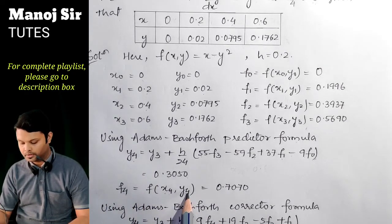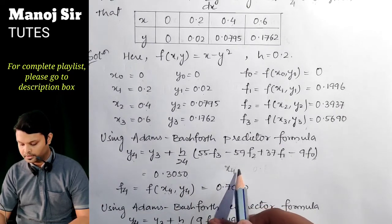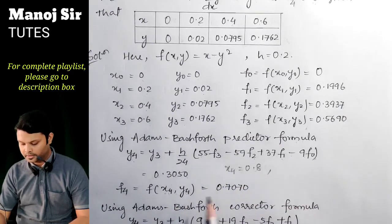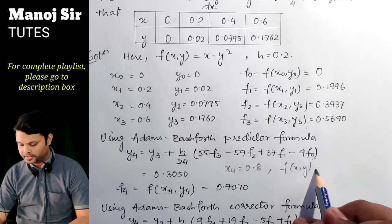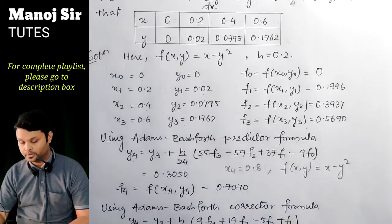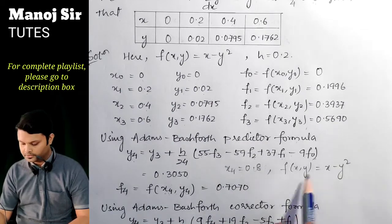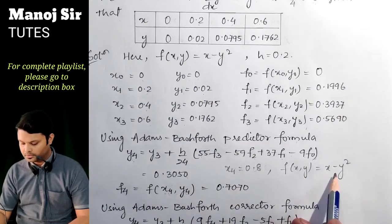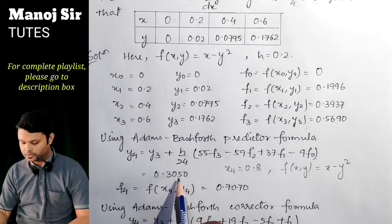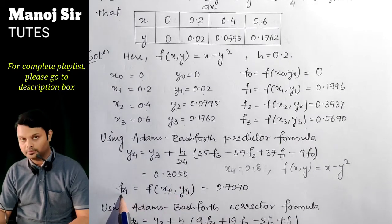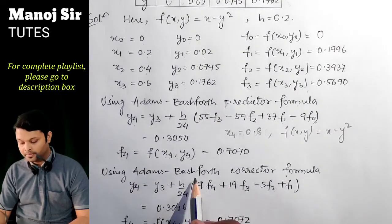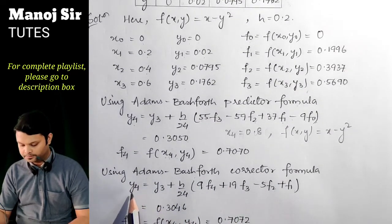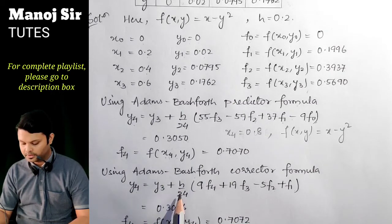After finding y₄, we compute f₄ = f(x₄, y₄). Here x₄ = 0.8 and the function is x − y². Substituting x = 0.8 and y = 0.3050, we get f₄ = 0.8 − (0.3050)² = 0.7070 to four decimal places.